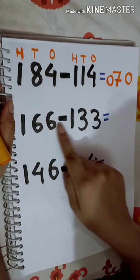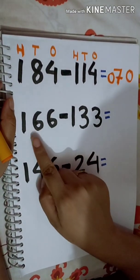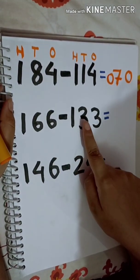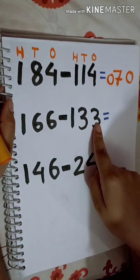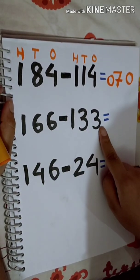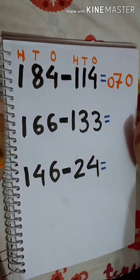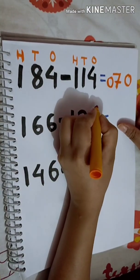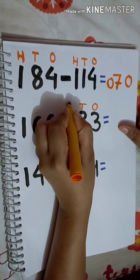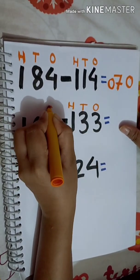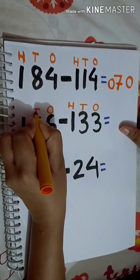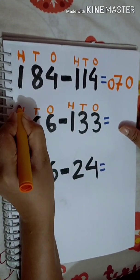Now let's move to the next question: 166 minus 133. First we will place the numbers according to their position — 1's, 10's, and 100's for both numbers.